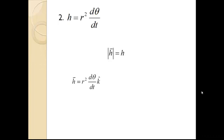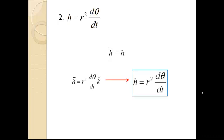The second step requires us to show that h equals r squared dθ/dt. Here we're basically showing the magnitude of vector h as a scalar without the direction k̂. So since the magnitude of vector h is simply h, we can show that the expression we previously derived can be written as this.